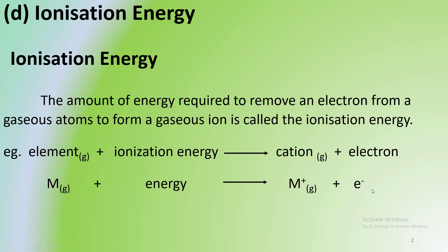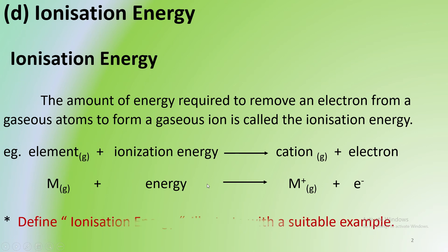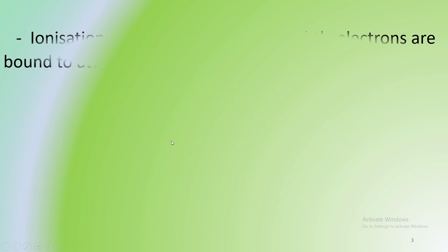The gaseous ion type — electron energy at a low level relates to ionization energy. Ionization energy is very important to define. We will illustrate it with a suitable example and develop the equation.